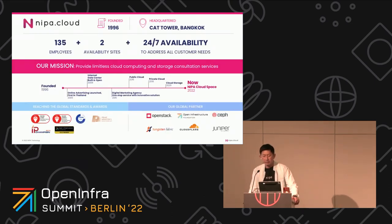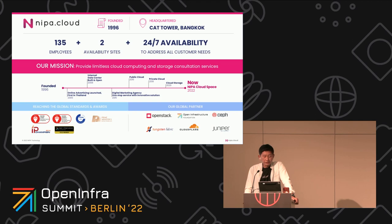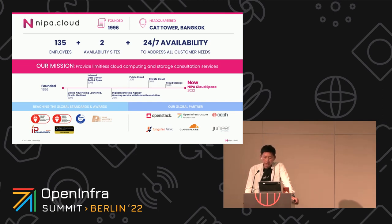A little bit about NIPA Cloud: we were established in 1996 in Thailand. We have our headquarters there, about 135 people, two availability sites, 24x7 NOC. Our mission is to provide limitless cloud computing with OpenStack and storage services. We have certifications including ISO 27001, ISO 20000-1, and ISO 29110. We partner with Juniper Network, and I'd like to give credit to Juniper for helping implement Tungsten Fabric.